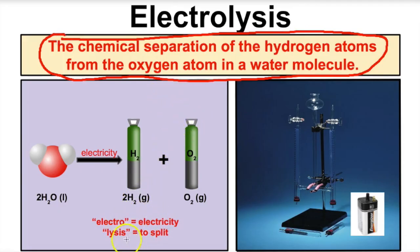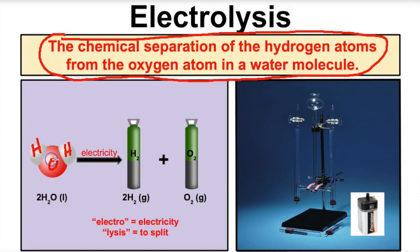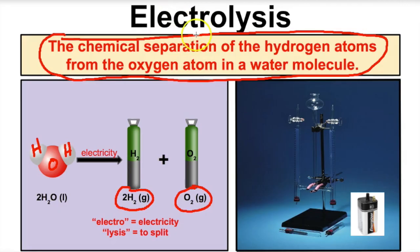Electro means electricity and lysis means to split — so we're going to split the water molecule using electricity. When you pass electricity through a water molecule, it's going to break the hydrogen bonds to the oxygen. What you're going to end up with is hydrogen gas and oxygen gas. We started with water and we're ending with two totally different substances — hydrogen gas and oxygen gas — so this is going to be a chemical change.